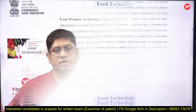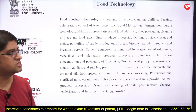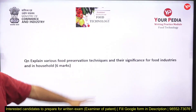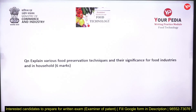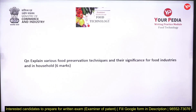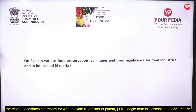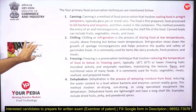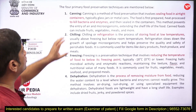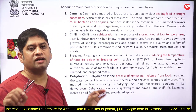The questions are taken from the topic of food processing principles — scanning, chilling, freezing, dehydration. Different questions can be framed from the same topic. This is a 6-mark question as you can expect in the actual exam: 'What are the various food preservation techniques and what is their significance for food industries and households?' There are four basic food preservation techniques: canning, chilling, freezing, and dehydration.